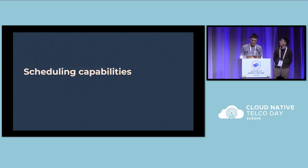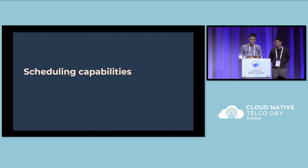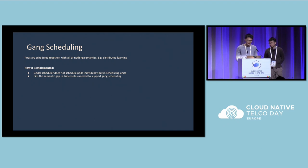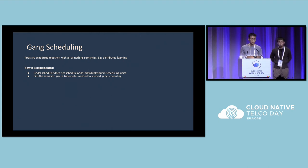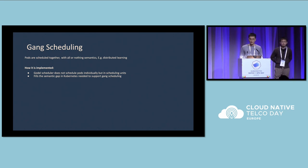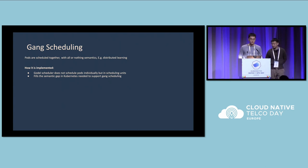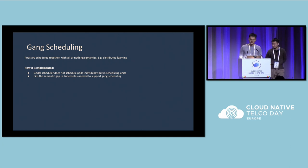Now I'll share some of the scheduling capabilities. These are designed to help us run our offline workloads on Kubernetes. The first feature, and a very common requirement for batch processing schedulers, is gang scheduling. In gang scheduling in the context of Godel, all pods within a single gang are scheduled together with all-or-nothing semantics. This is important for scenarios like distributed learning, where the absence of a pod running the parameter server would block the progress of the whole job. Godel supports this by scheduling pods not individually but in scheduling units, filling the semantic gap needed for gang scheduling in Kubernetes. The binder takes the necessary actions to ensure all pods get bound together.